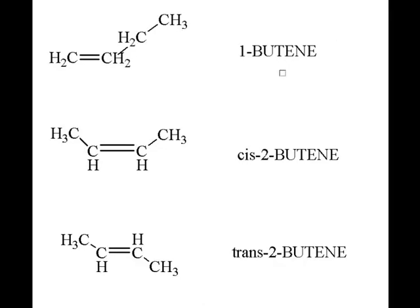This is butene because there's four carbons in the longest chain in this compound. This is called 1-butene because the double bond starts at the one carbon, number one, one, two, three, four.